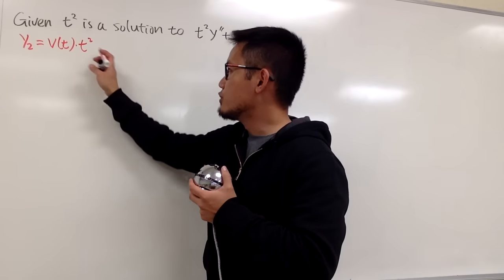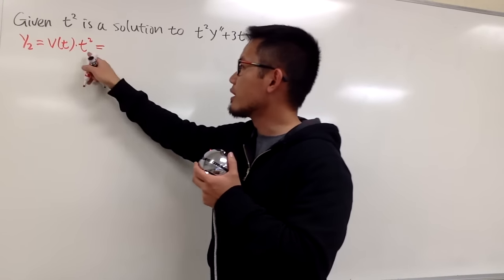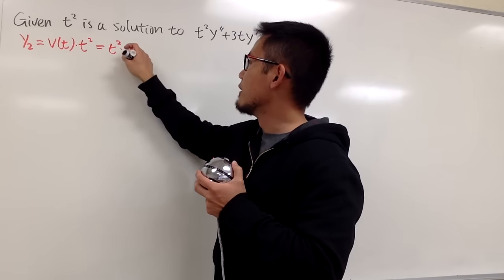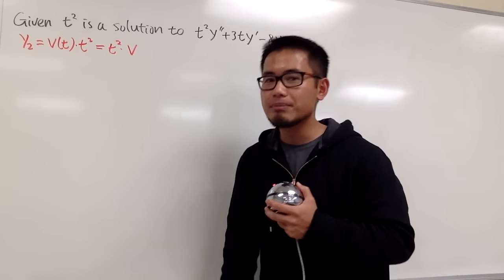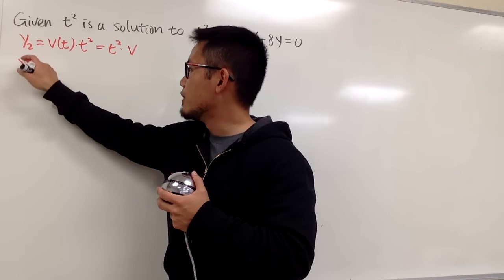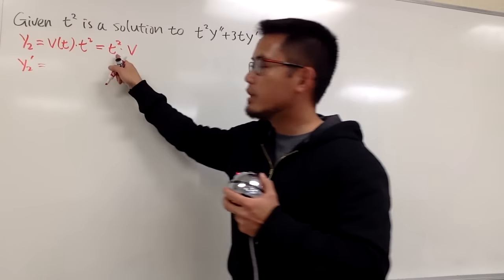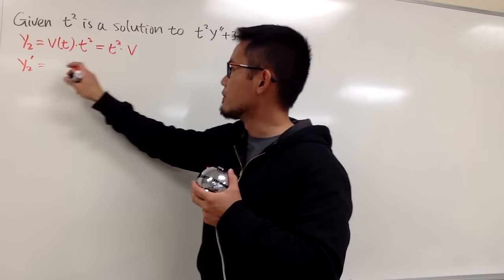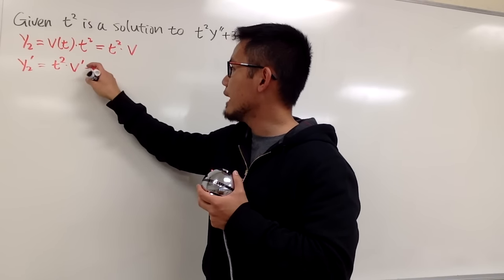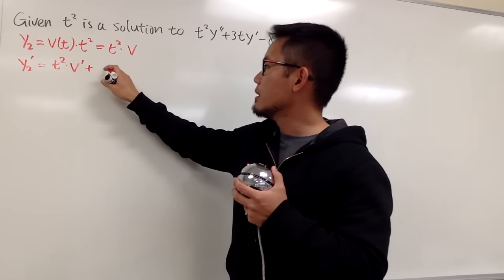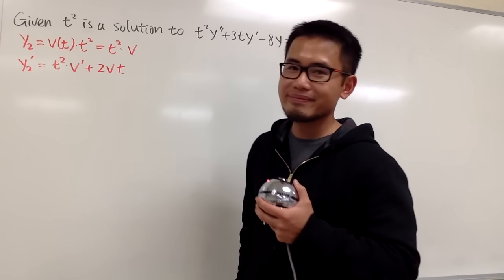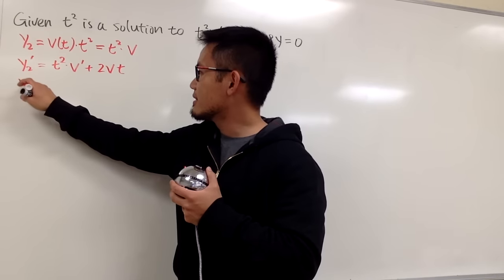Before we differentiate, let me write this in a nicer form — t squared times φ, where φ is a function of t. Now let's differentiate: y2 prime. We use the product rule. We keep the first function, t squared, and multiply by the derivative of the second, φ prime, and then add the second function φ multiplied by the derivative of the first, which is 2t.